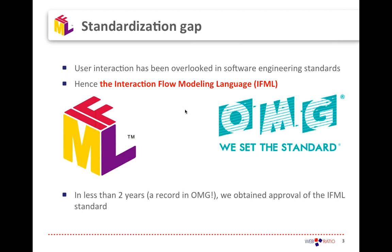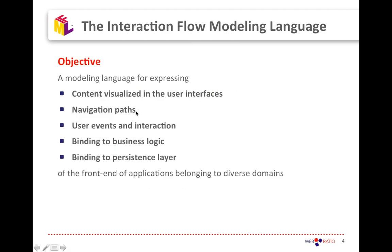In a couple of years we obtained the standardization of the language, and now IFML is in a beta version where we are still able to include feedback and comments from users. The expected IFML version 1.1.0 is due in February 2014. IFML aims at describing the navigation paths of users throughout the user interface and the content that appears in that interface.